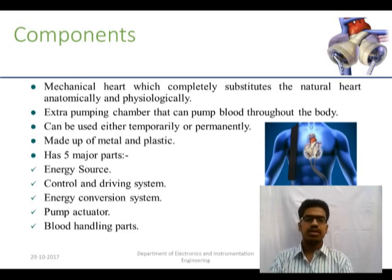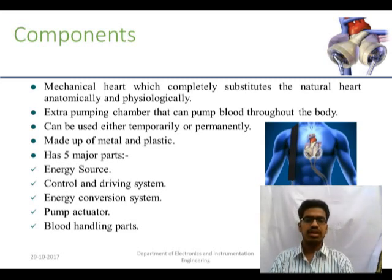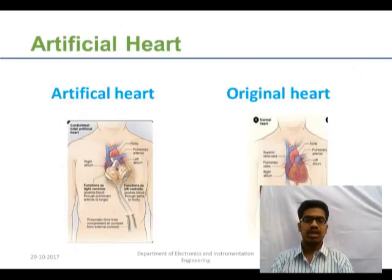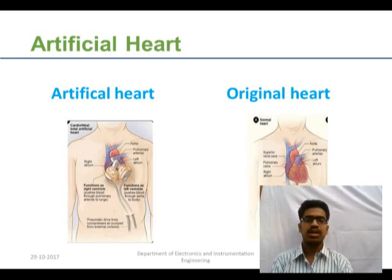As you can see in the diagram, the main components of this artificial heart are completely suitable and made from plastic rather than iron, which may be corrosive when placed in the heart chamber. It has five major components provided from the outer mass chamber: energy source, control and driving system, energy conversion system, pump actuator, and blood handling parts.